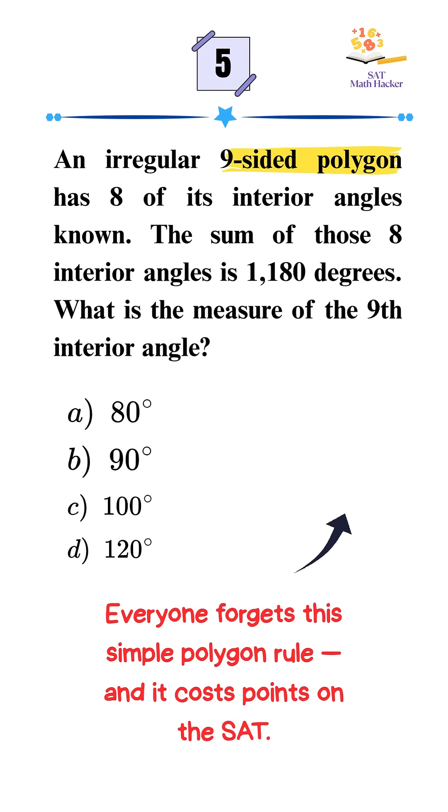We're told that a nine-sided polygon has eight interior angles that add up to 1,180 degrees, and we're asked to find the ninth angle.